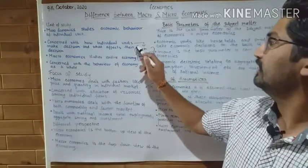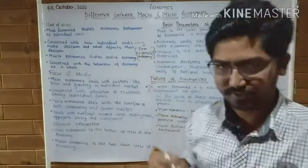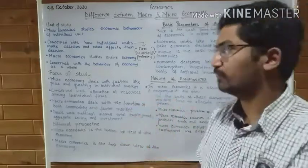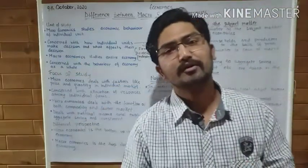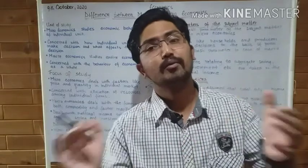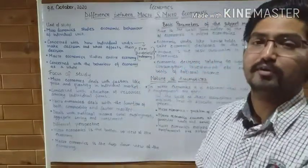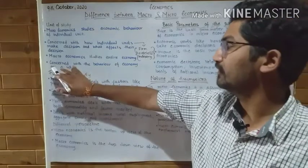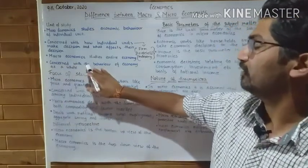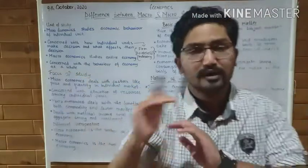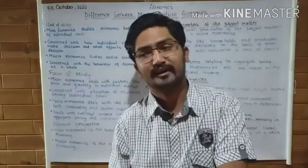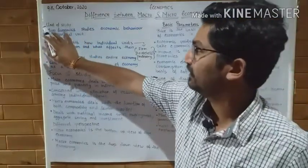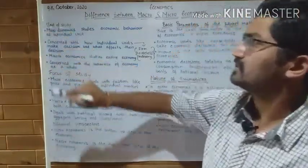These individual units are mainly firms, households, and industries. On the other hand, macroeconomics is the study of the whole economy. It is concerned with the behavior of the economy as a whole — we try to study the entire economy at once.